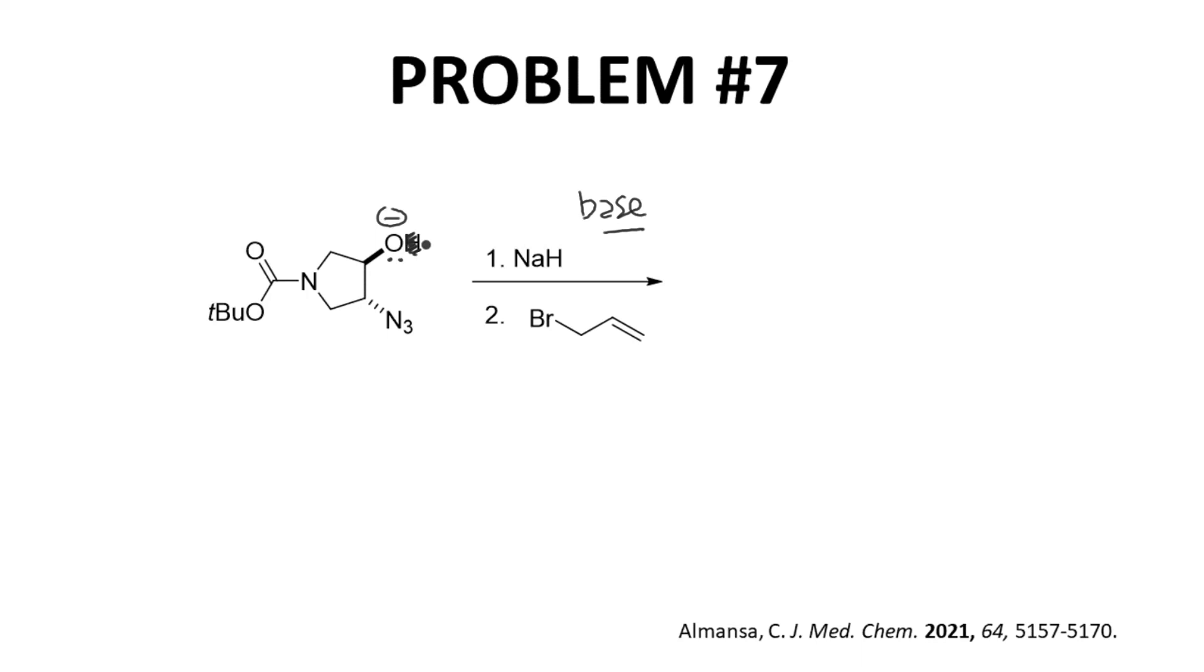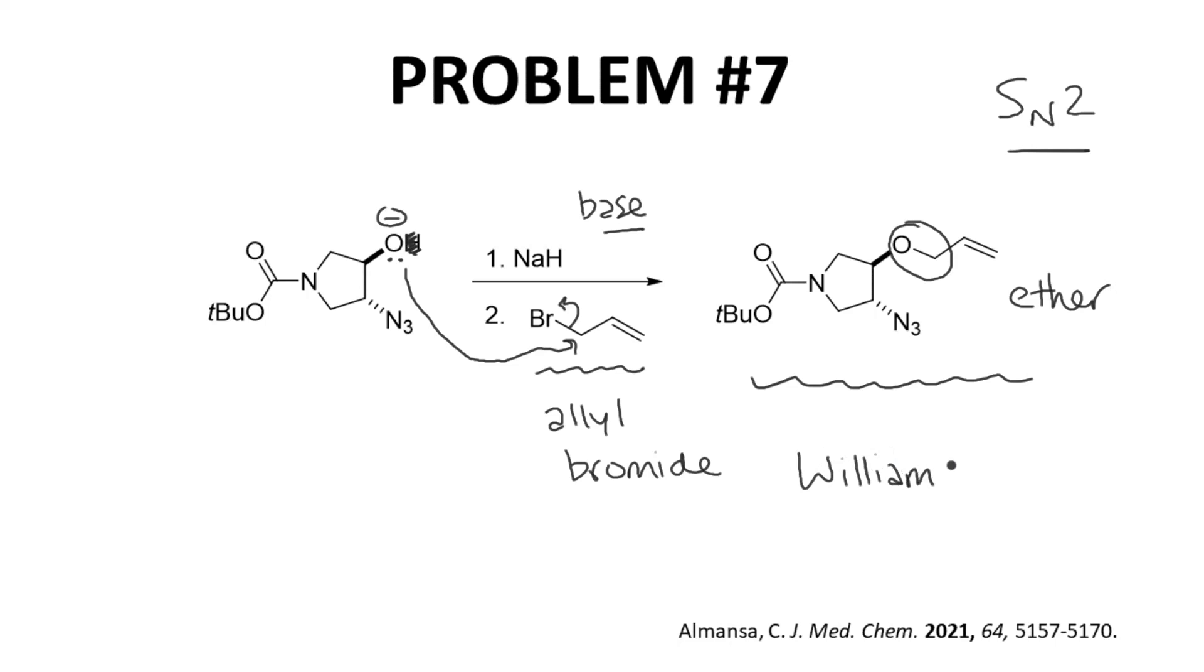In the next step, we have a primary halide. This is allyl bromide, which is a fantastic SN2 electrophile. So our nucleophile will attack the carbon bearing the leaving group. And here is our product formed through an SN2 reaction. Note that we made a new C-O bond. This product is an ether. And this overall transformation of an alcohol to an ether is called a Williamson Synthesis.